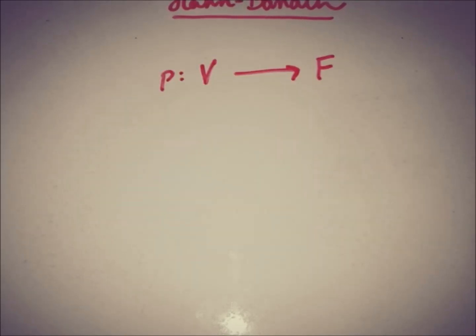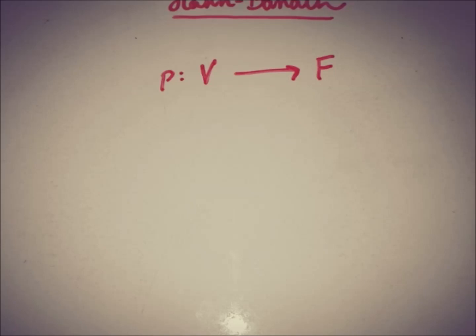Before talking about the statement of this theorem, I will discuss what is meant by the extension of a function and what is meant by a finite functional. So first, what is meant by a finite functional: if P is a functional and V is a linear space defined over a field F, we have a functional P from V to F.